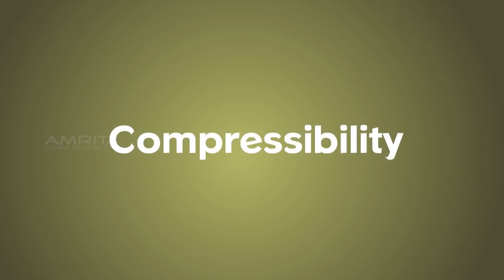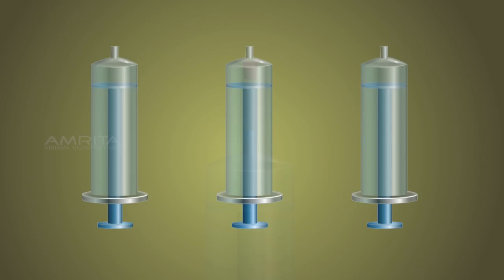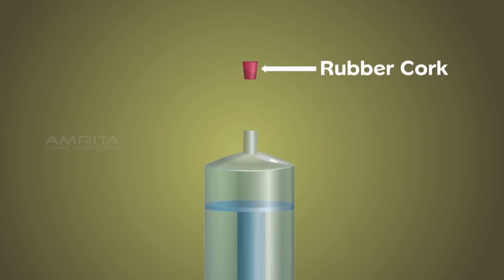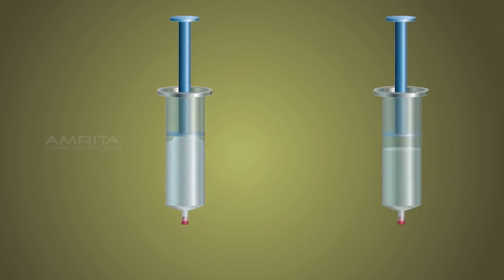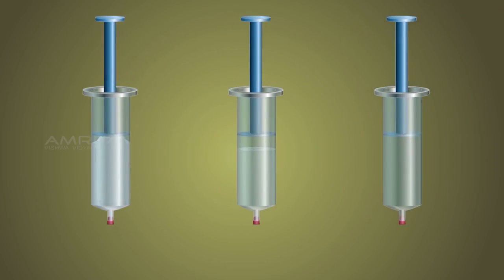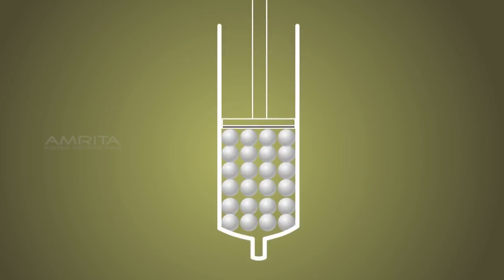Let us examine compressibility, another attribute of matter. These are empty syringes. Close the nozzles of the syringes with rubber cocks. Fill one syringe with chalk pieces, fill another with water and leave one syringe empty. Insert the piston and try to compress the material in the syringe. You will see that the syringe with the solids is not compressible because the solids are rigid.